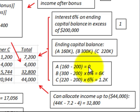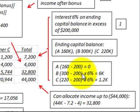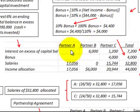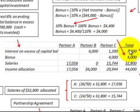Calculating interest on the ending capital balances: Partner A had only $160,000, which doesn't meet the $200,000 threshold, so they receive zero interest. Partner B had $300,000 invested — the excess over $200,000 is $100,000, times 6% gives $6,000 in interest. Partner C had $220,000, giving an excess of $20,000, times 6% gives $1,200. The total interest allocation is $7,200.